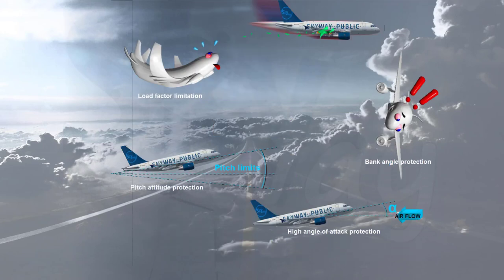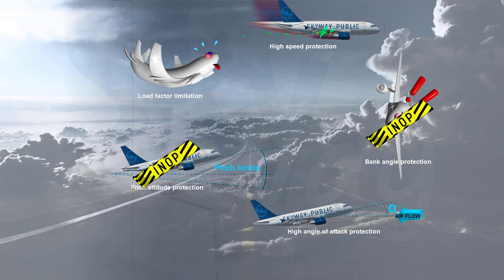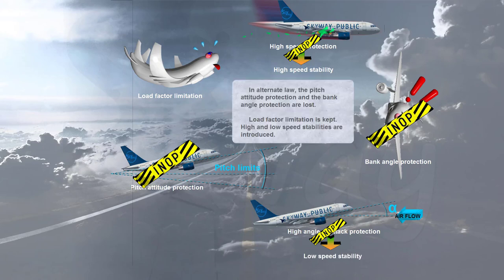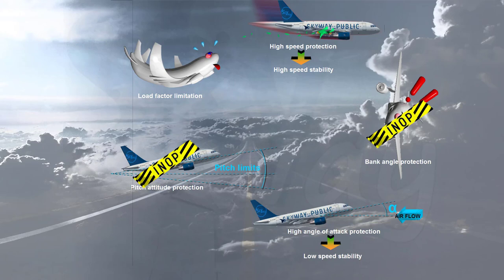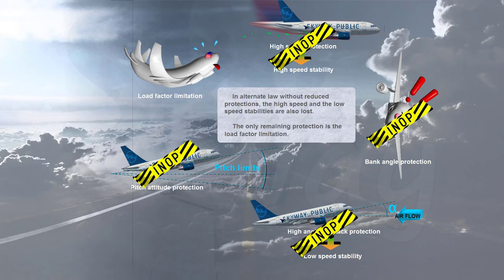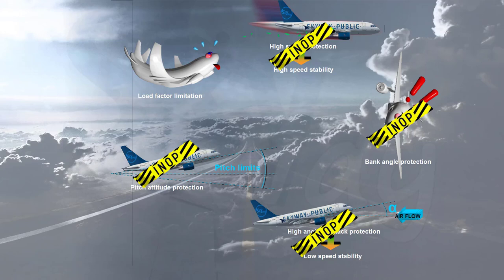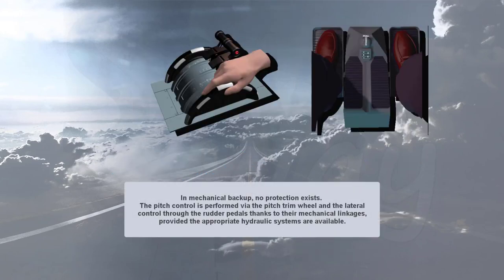In normal law, all the protections are available. In alternate law, the pitch attitude protection and the bank angle protection are lost, but load factor limitation is kept and high and low speed stabilities are introduced. In alternate law without reduced protections, the high speed and low speed stabilities are also lost, leaving only the load factor limitation. In direct law, all protections are lost and the aircraft handles as a conventional aircraft. In mechanical backup, no protection exists — pitch control is performed via the pitch trim wheel and lateral control through the rudder pedals via their mechanical linkages, provided the appropriate hydraulic systems are available.